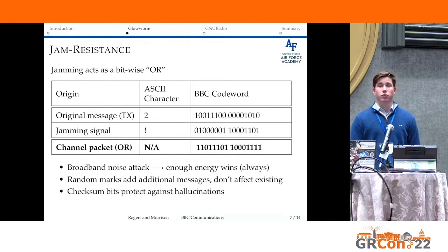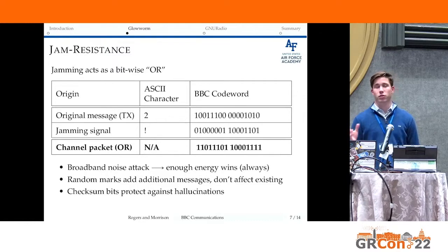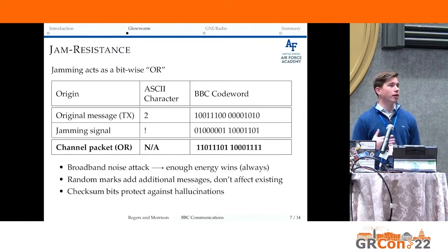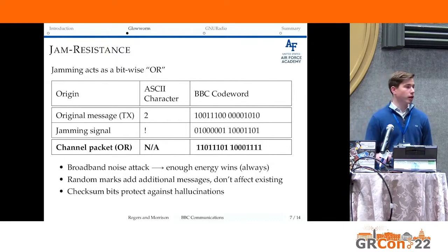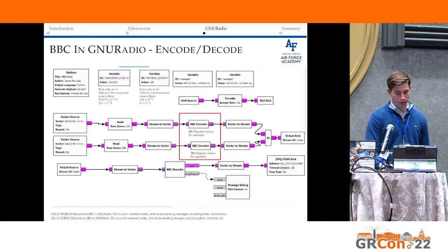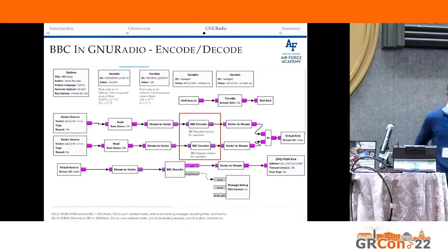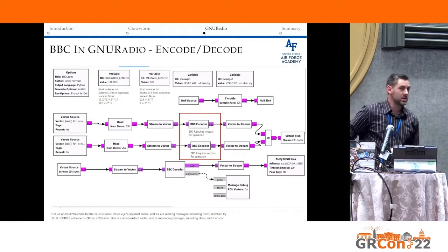Another way to improve robustness is to add a pseudo checksum to the end of your message — adding additional marks assuming your code word is bigger — to reduce the number of hallucinations. That's a lot of theory, so now we'll jump into some GNU Radio examples.